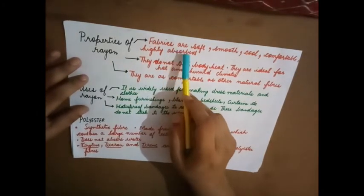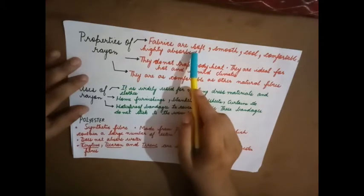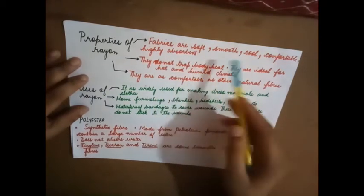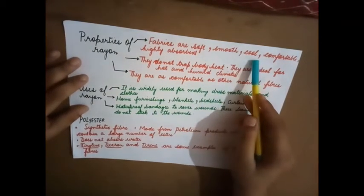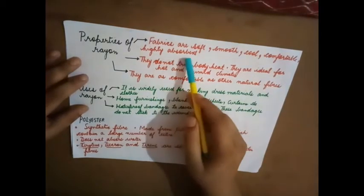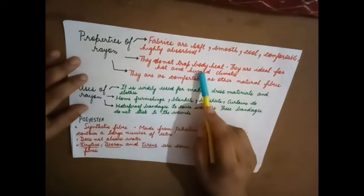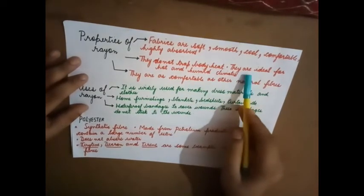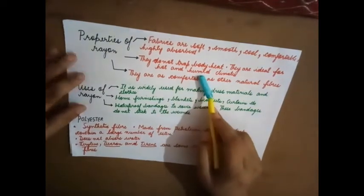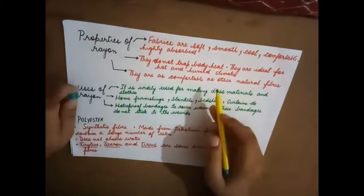Rayon fabrics are soft, smooth, cool, comfortable, and highly absorbent. It can absorb water and sweat. They do not trap body heat. They are ideal for hot and humid climates.